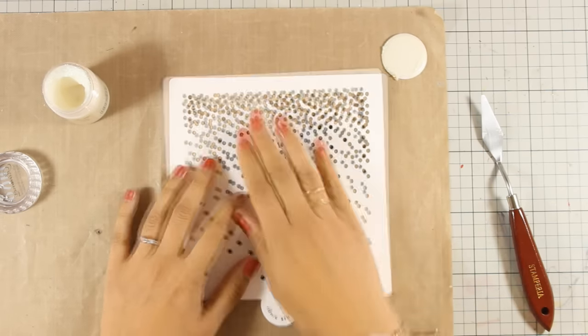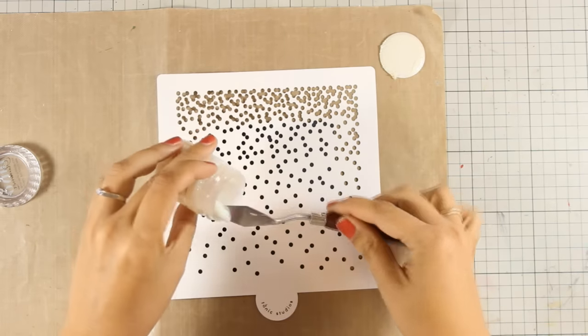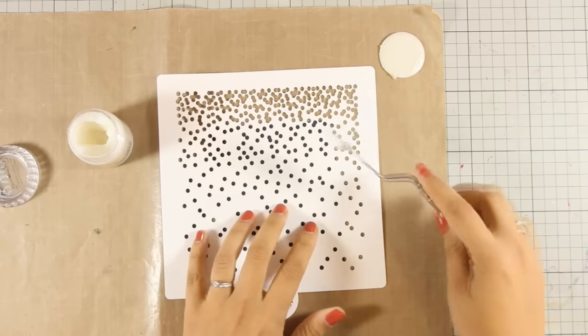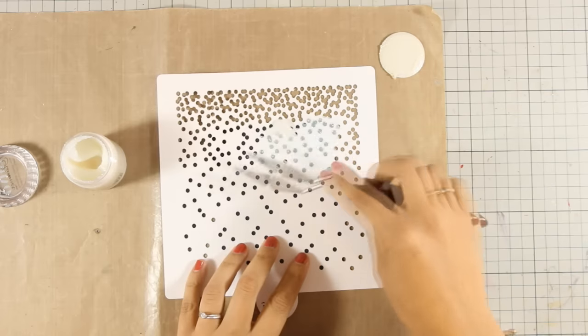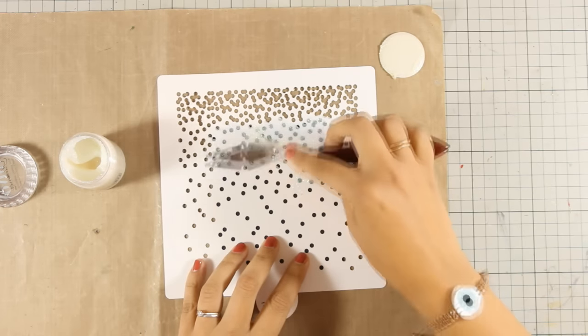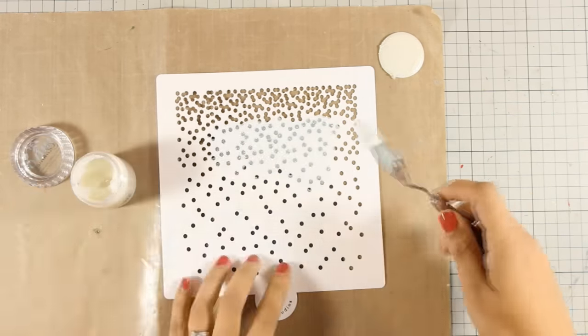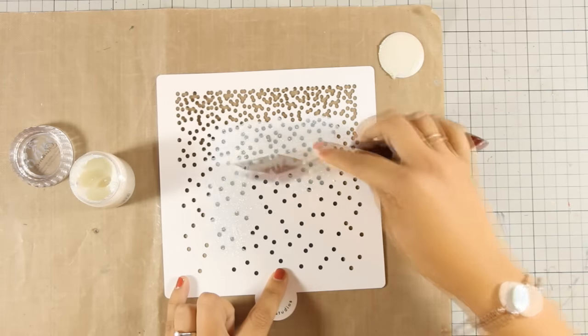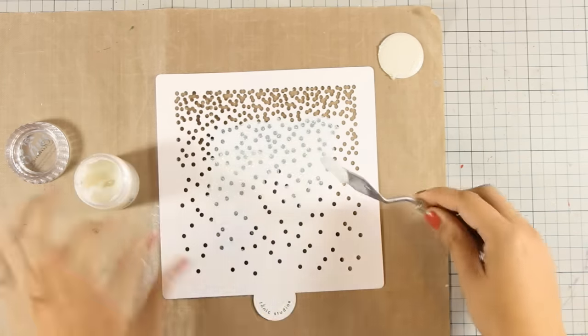I'm going to place it down and with my spatula I'm going to apply a generous amount of my paste. You don't have to apply it generously but I don't really mind. I just want to have thick and nice snowflakes on my background. Although I'm using a lot of product, nothing is going to waste because I'm going to scrape off everything at the end and put it back in the jar.